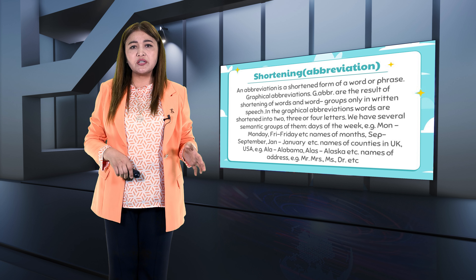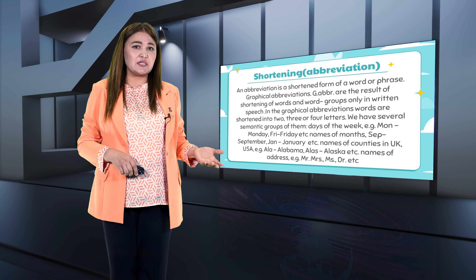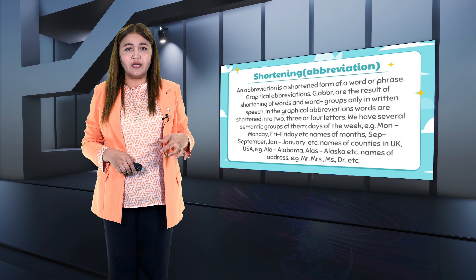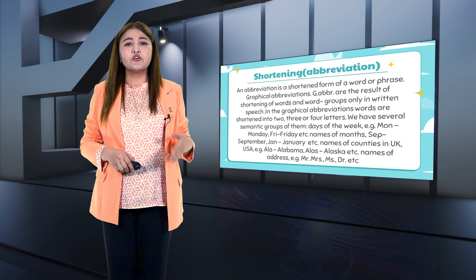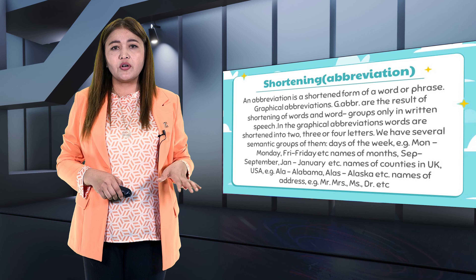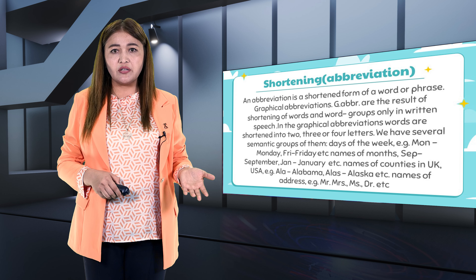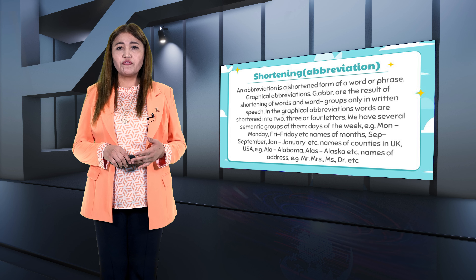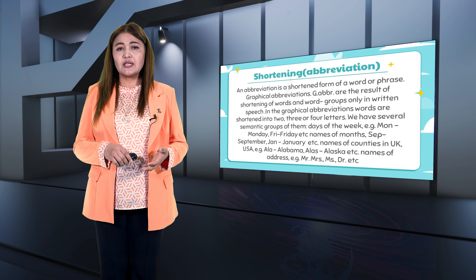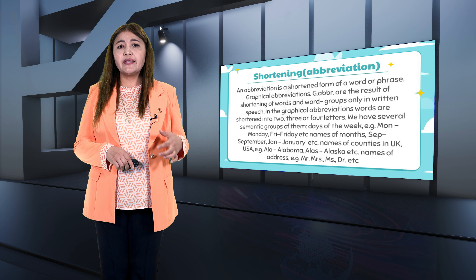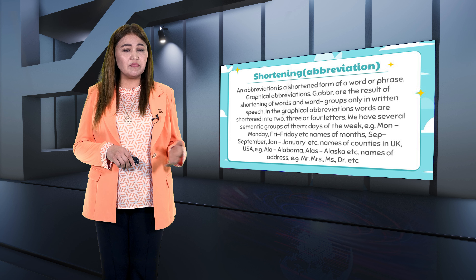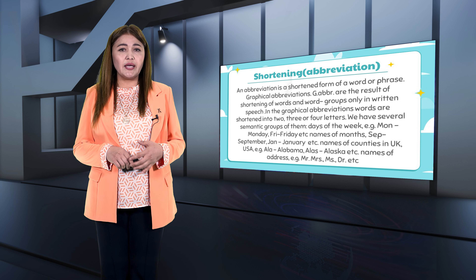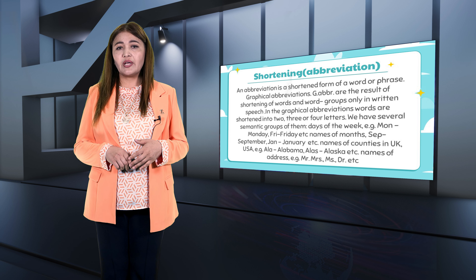Shortening is an abbreviation — a shortened form of a word or phrase. There are graphical abbreviations and lexical abbreviations, or acronyms. Graphical abbreviations are the result of shortening words and word groups only in written speech, such as days of the week — Monday, Friday — and names of months — September, June, January — and names of countries, such as UK (United Kingdom) and USA (United States of America), and titles like Mr., Mrs., Dr.